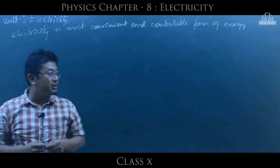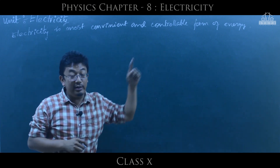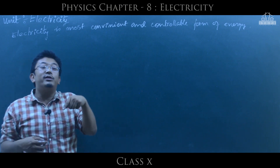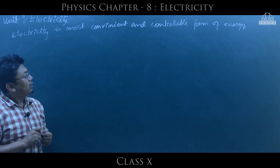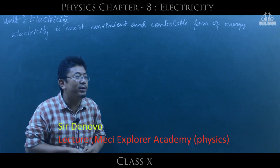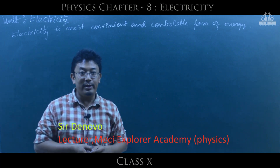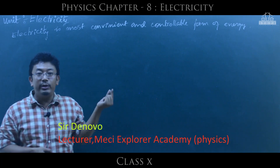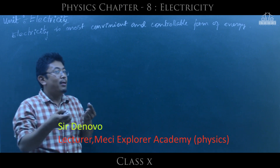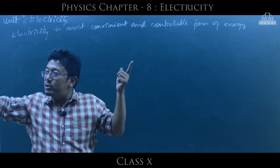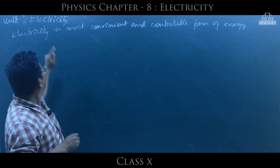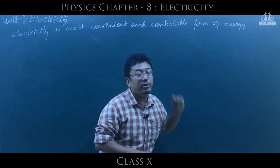Basically, electricity is called energy. When it comes to energy, it will have the potential to do work. Work is more convenient for electrical items, therefore electrical work is more convenient than mechanical work. Now, there is a bulb — the bulb system will switch to ON. So, electricity is a form of energy.